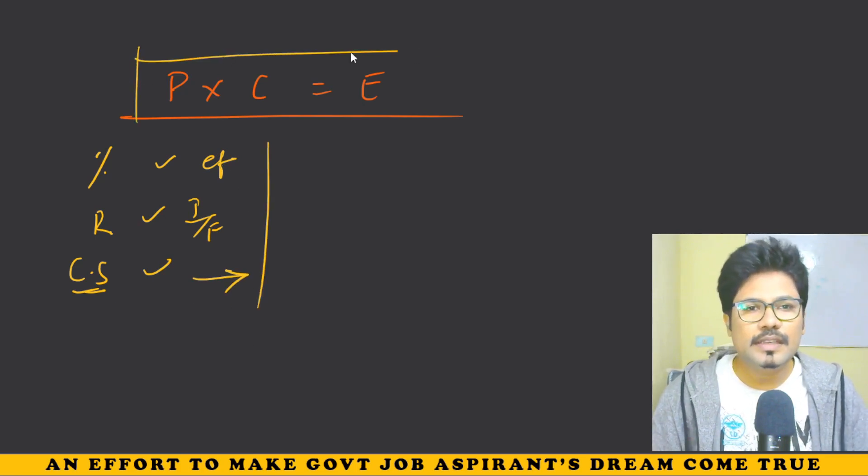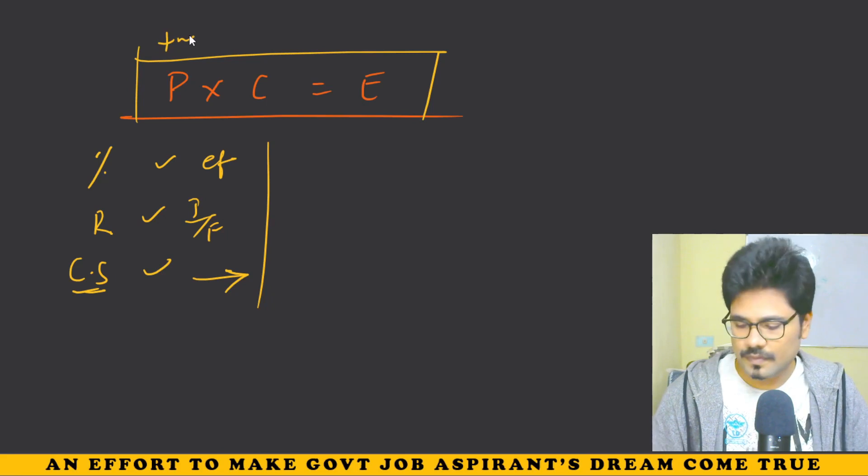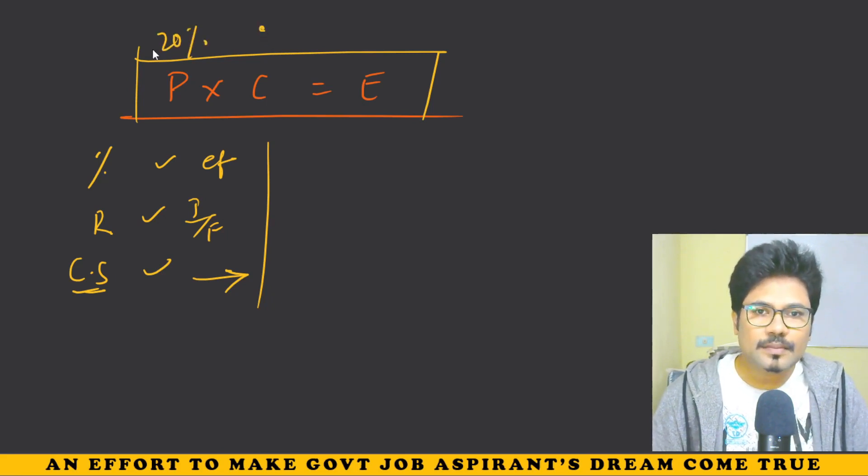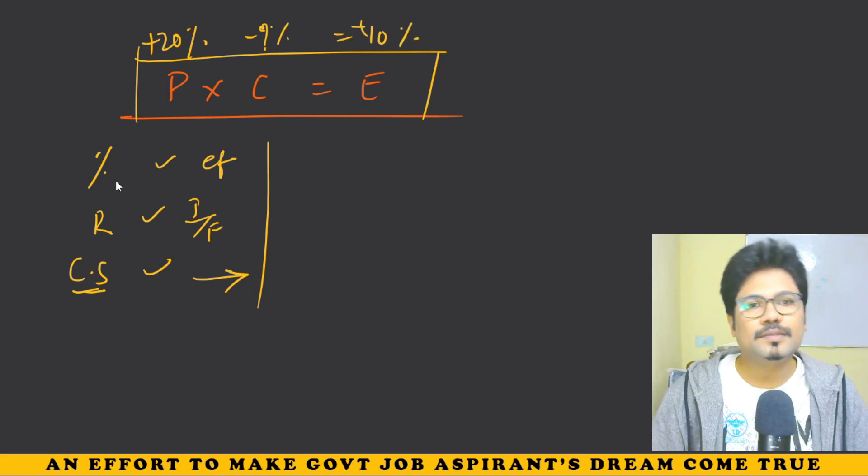Now, P into C is equal to E, latest trend. Price changes by plus 20%. Consumption changes by minus some percentage. Expenditure increases by 10%. This is the latest trend.